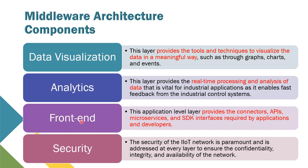The next one is front-end, which is the application-level layer that provides the connectors, API, microservice, and SDK interface required by the application and developer. The last one is security, where the security of the IoT network is paramount. If there is no security in the system, your data might be breached to competitors and everyone will be able to access your data. In a factory or industry, we don't want this to happen. That's why middleware is supposed to be able to secure all of the data that has been collected.